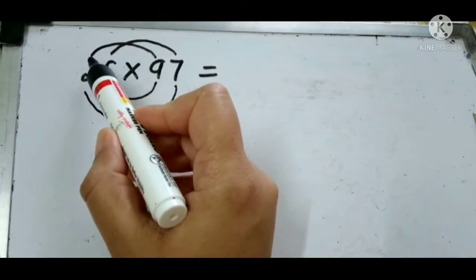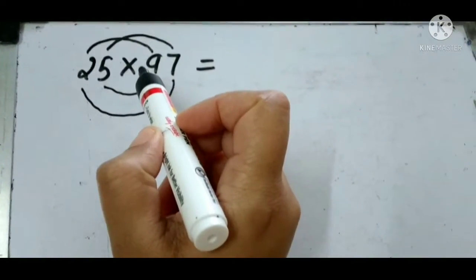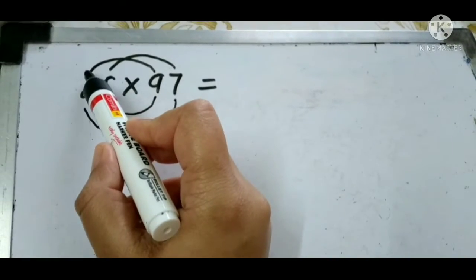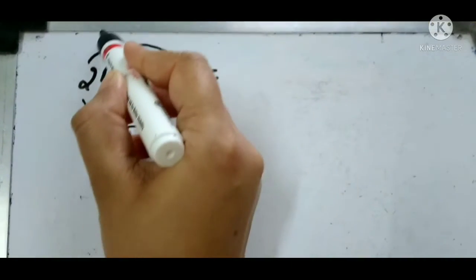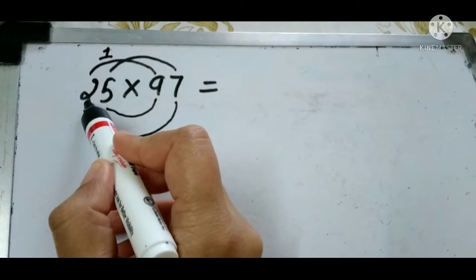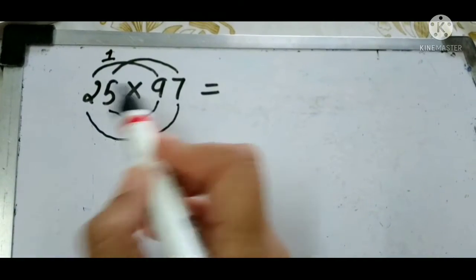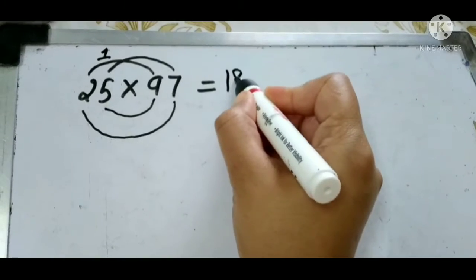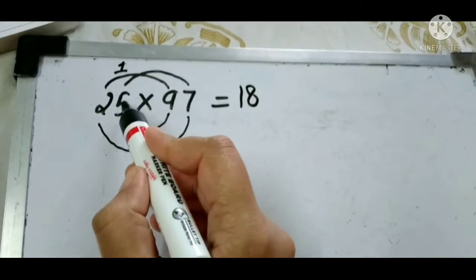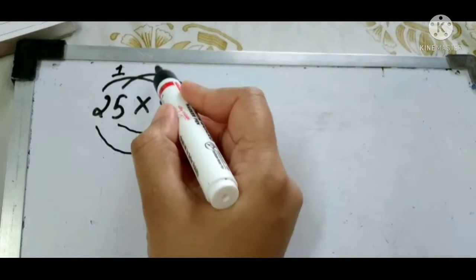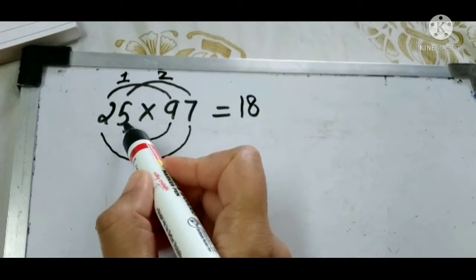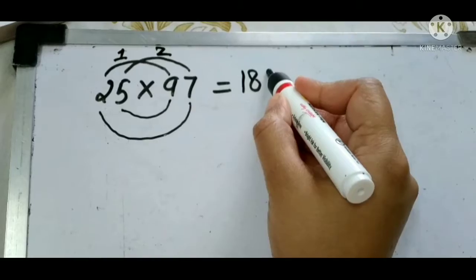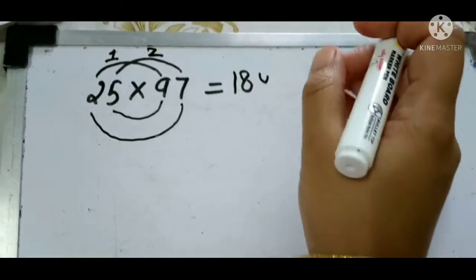97. This is a two-digit multiplication. What we do first: multiply the first digit of this and the first digit of this, and write. That is 18. And now second and second, that is 35.